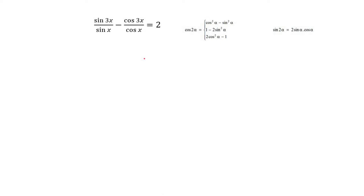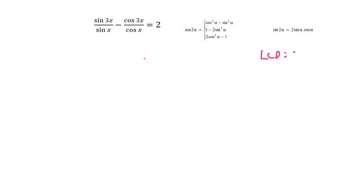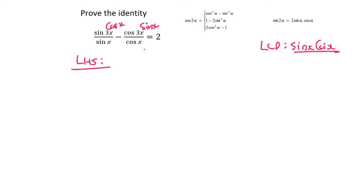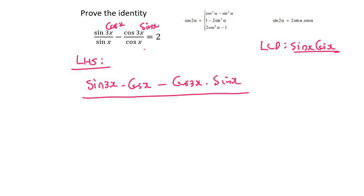Here's some more advice. When you have a fraction plus or minus another fraction, the first thing you should do is get a common denominator. The lowest common denominator for this one is going to be sin x cos x. So we're going to multiply the first fraction by cos x and the second one by sin x. We're working on the left hand side, so we're going to have sin 3x times cos x minus cos 3x times sin x over sin x cos x.